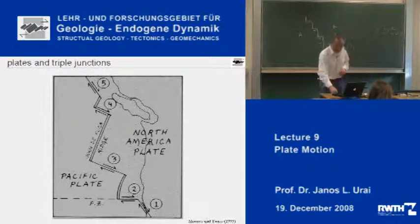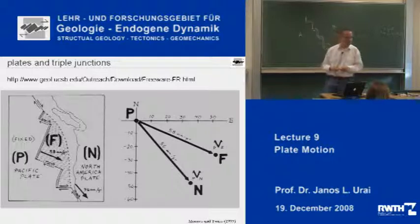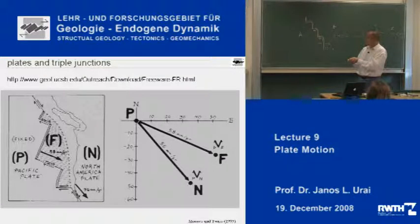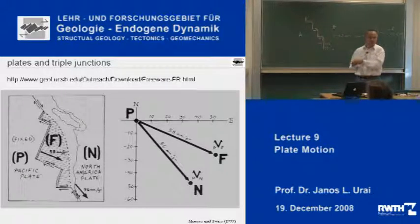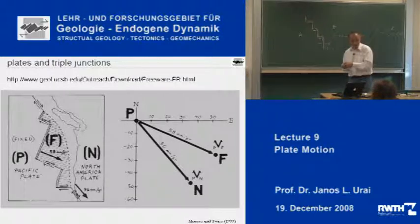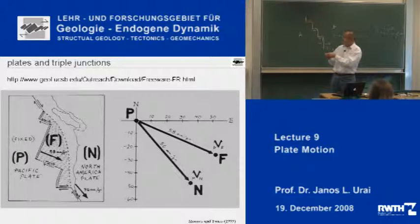What she did is she made a velocity triangle. She assumed that there was this little plate here — which she called the Farallon plate — and it was moving away at 58 millimeters per year. Then if you take these two vectors, 56 and 58, you can calculate the velocity of this little plate against the North American plate. And the result was that she predicted there was a subduction zone here.